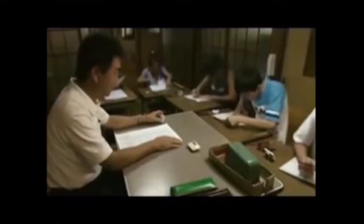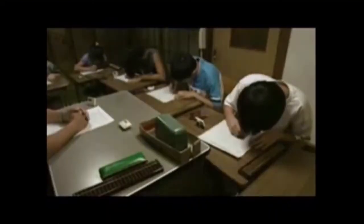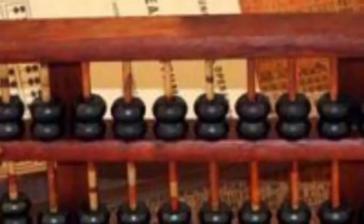12 year old Kota Kazuka: I practice two hours on weekdays and ten hours on the weekends. I want to become the national champion. Along with the other high flyers, he can now do huge calculations with a purely imaginary abacus, manipulating nothing but thin air. An ancient device still well alive in the modern world.